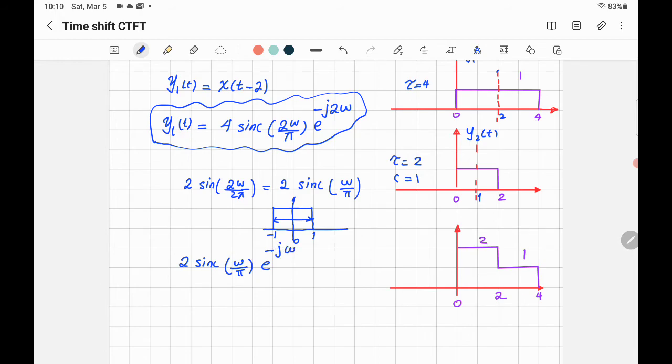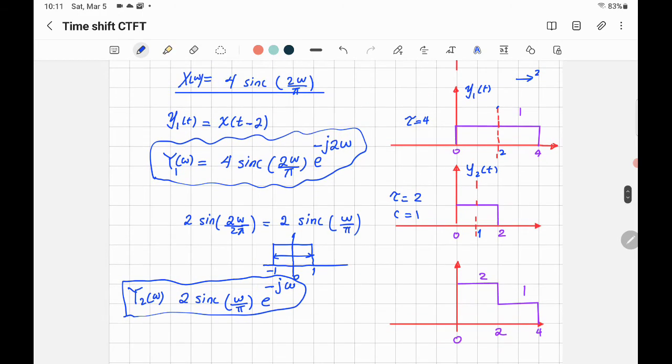Well, there is an error here. That's not time domain, that's in ω. Should be written like that—uppercase letter and function of ω. That's the Fourier transform, and that's the Fourier transform for the second signal here.